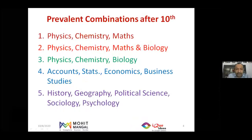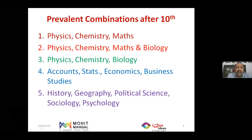Let me talk about the prevalent subject combinations available after grade 10. First is Physics, Chemistry, Mathematics — the science A group or engineering group. Second is Physics, Chemistry, Mathematics, and Biology — the AB group. Third is Physics, Chemistry, and Biology — the medical or science B group. Fourth is Accounts, Statistics, Economics, and Business Studies — the commerce group. Fifth is History, Geography, Political Science, Sociology, and Psychology — known as humanities or arts.